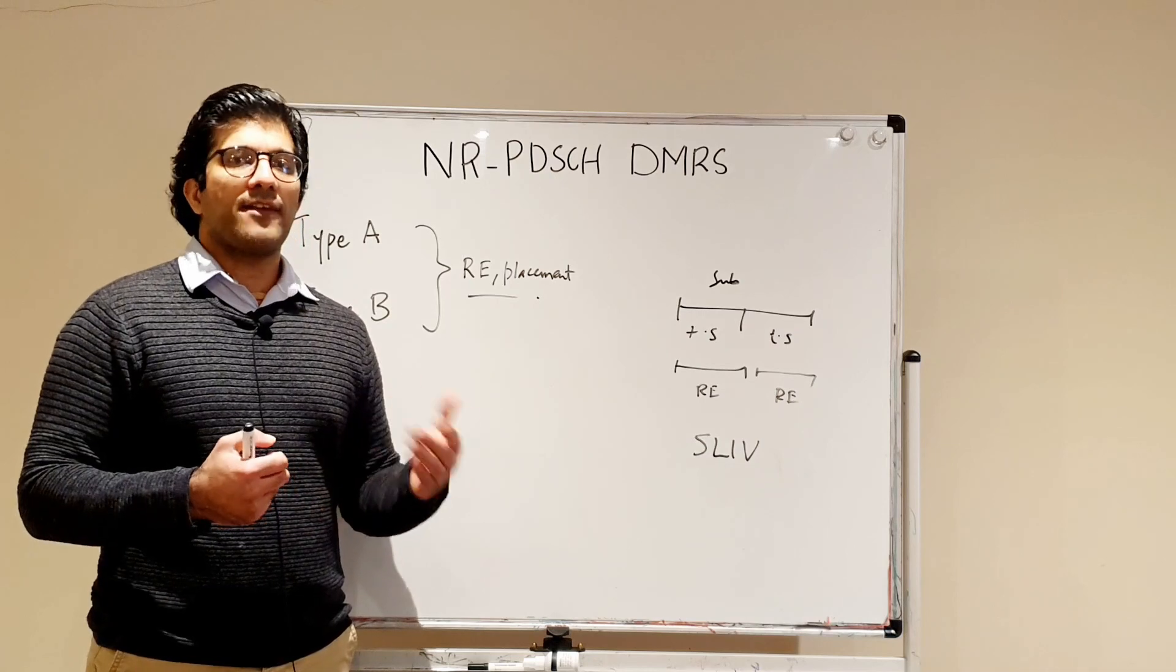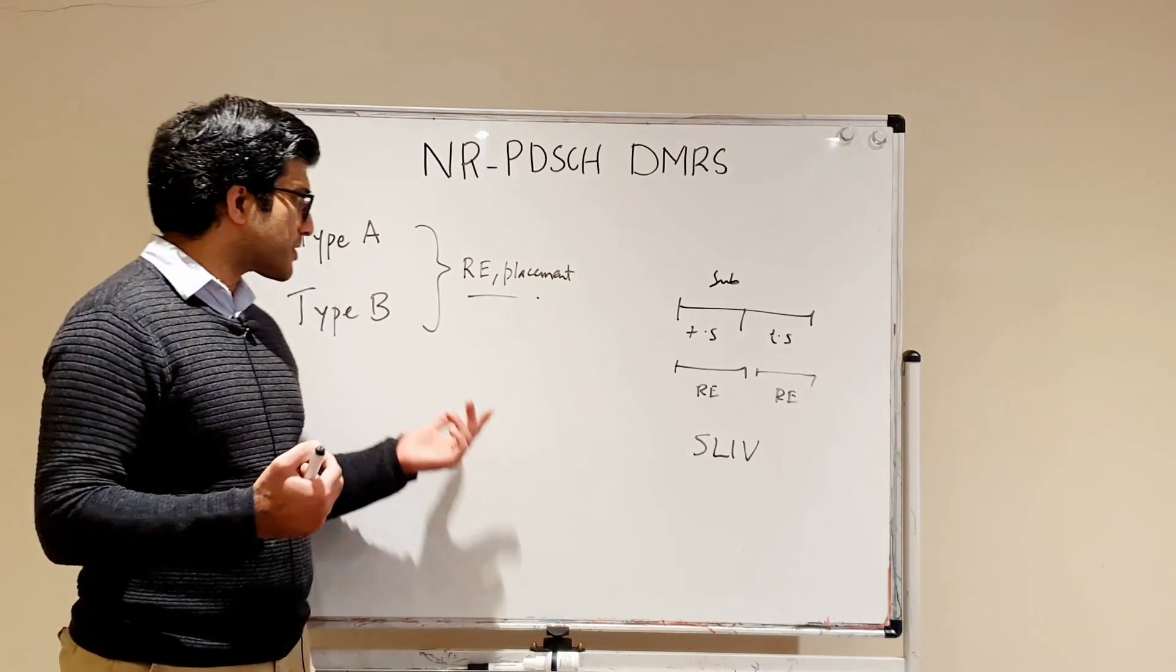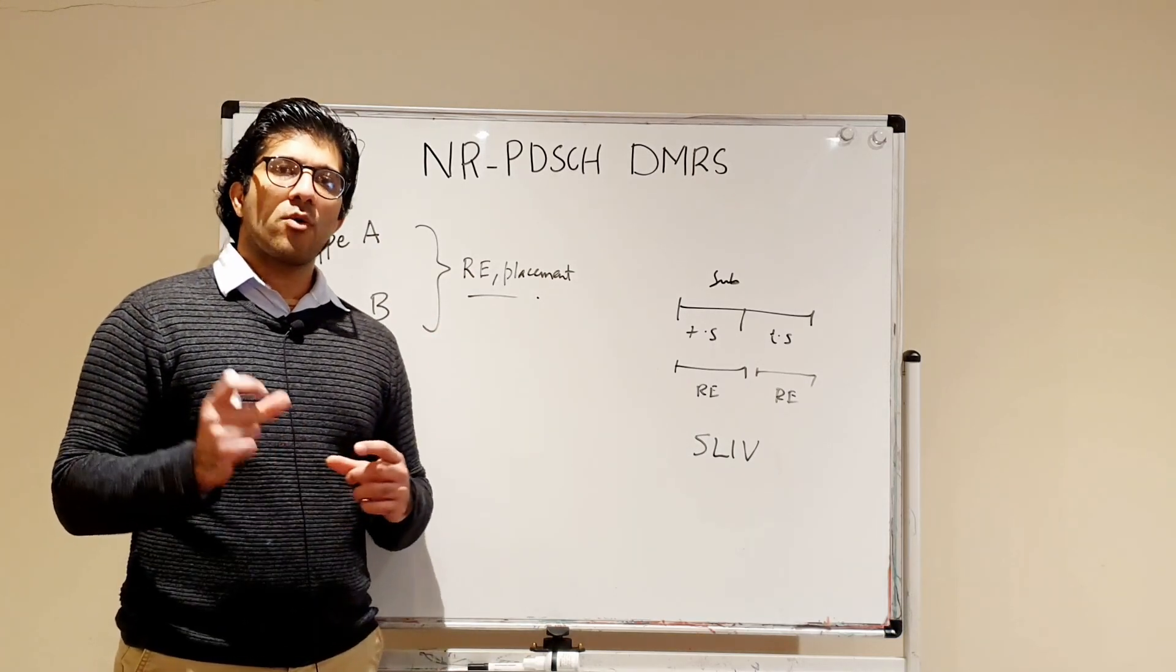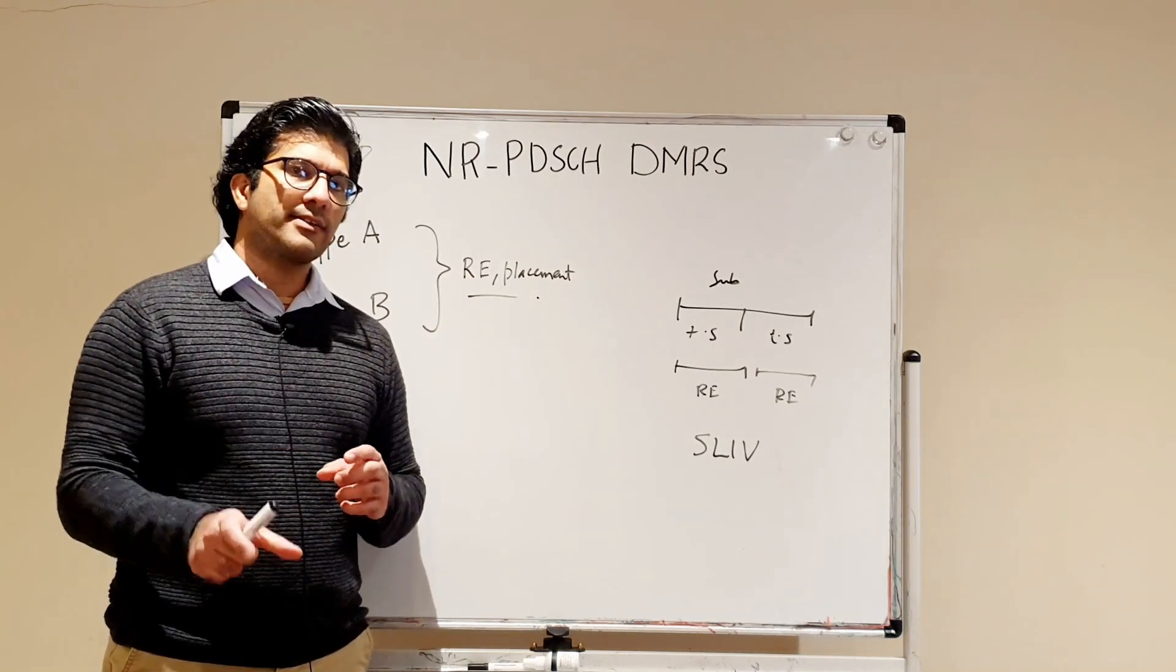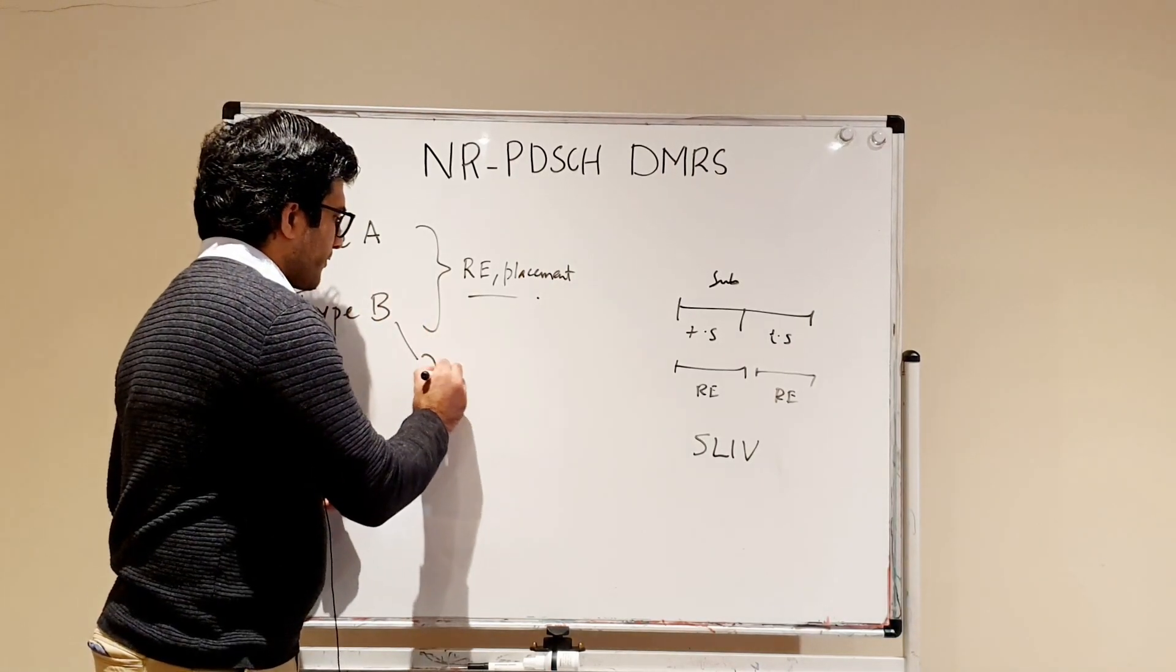For the Type A we have only one resource element allocated to that DMRS, and for Type B we have two.